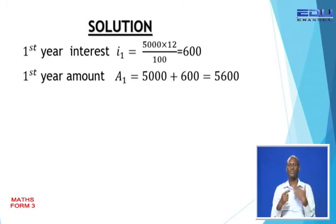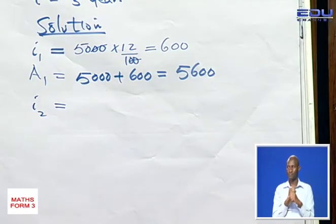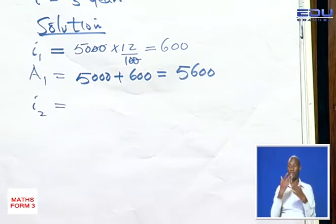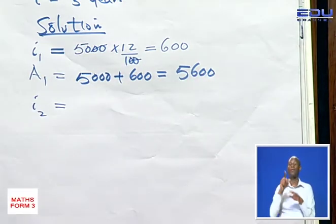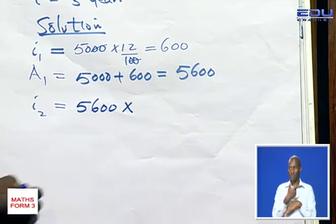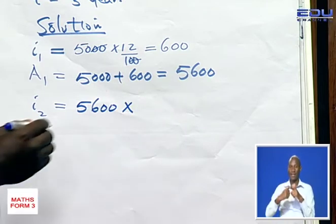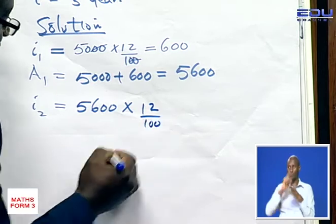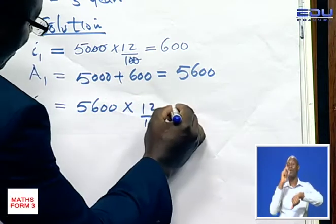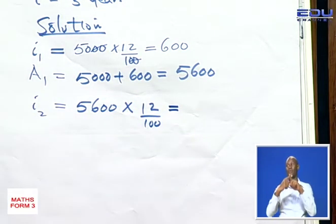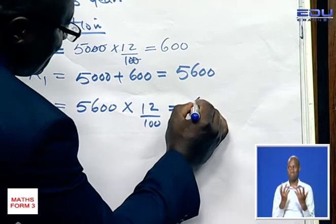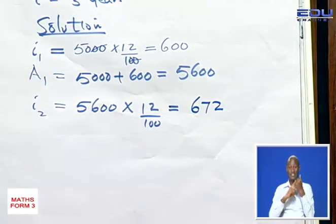For the interest in the second year, the amount at the end of the first year becomes the principal for the second year. So the principal is now 5,600, the interest rate is 12%, and the time is 1 year. Working this out gives us an interest of 672 for the second year.